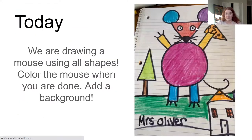Today, after reading the Mouse Shape story, we made a mouse using just shapes. We made a circle for the body, triangle for the head, circles for the ears, rectangles for the arms, and then we added some details and colored it in.